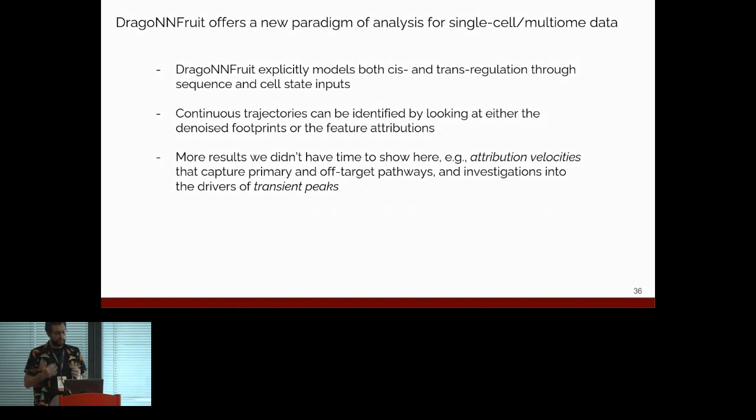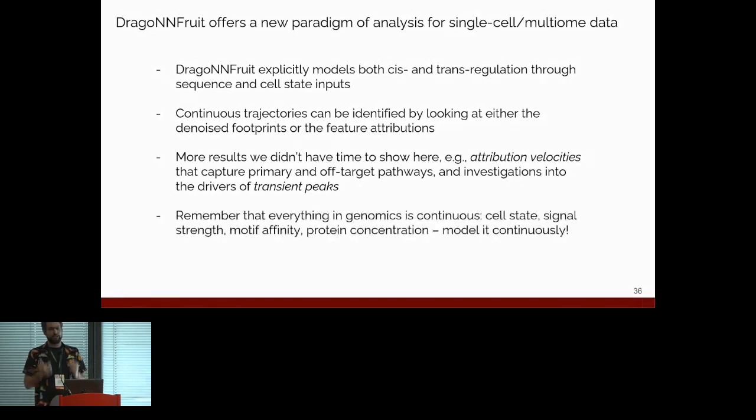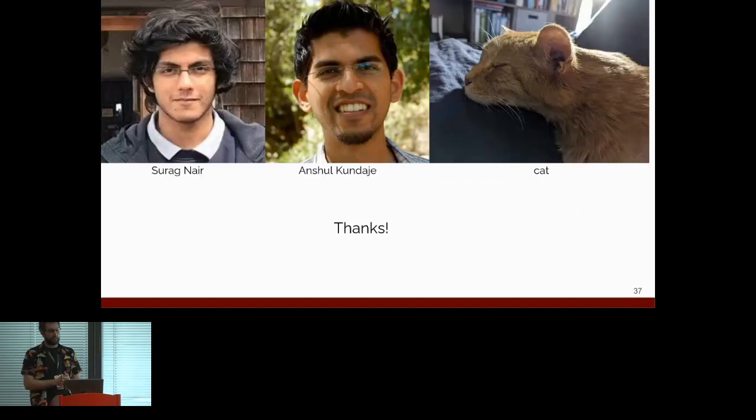And so finally, I just want to remind everyone that everything in genomics is continuous. When we talk about things like this is an OCT binding site, it's not just an OCT binding site binary, that there's a motif affinity there that really matters. Cell types aren't really one thing. There's a continuum across them. Protein concentration, signal strength, everything is continuous. And the more things in biology we can model continuously, the more rare things we're going to be able to model well. So finally, I want to thank Saurabh for all his help with this analysis, on top reviewing my PI, as well as the brains behind the operation. Thank you.